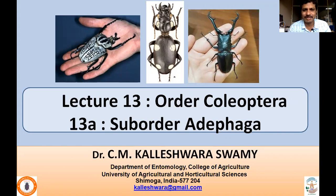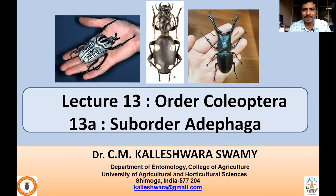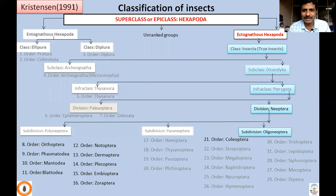It consists of four sub-orders, being a very dominant group consisting of varieties of beetles and weevils. This is one of the biggest orders, so it cannot be covered in a single lecture. That's why I have divided Order Coleoptera into two lectures. In the first lecture, 13a, I'll be talking about sub-order Adephaga. So this is where we are now — subdivision Oligoneoptera.